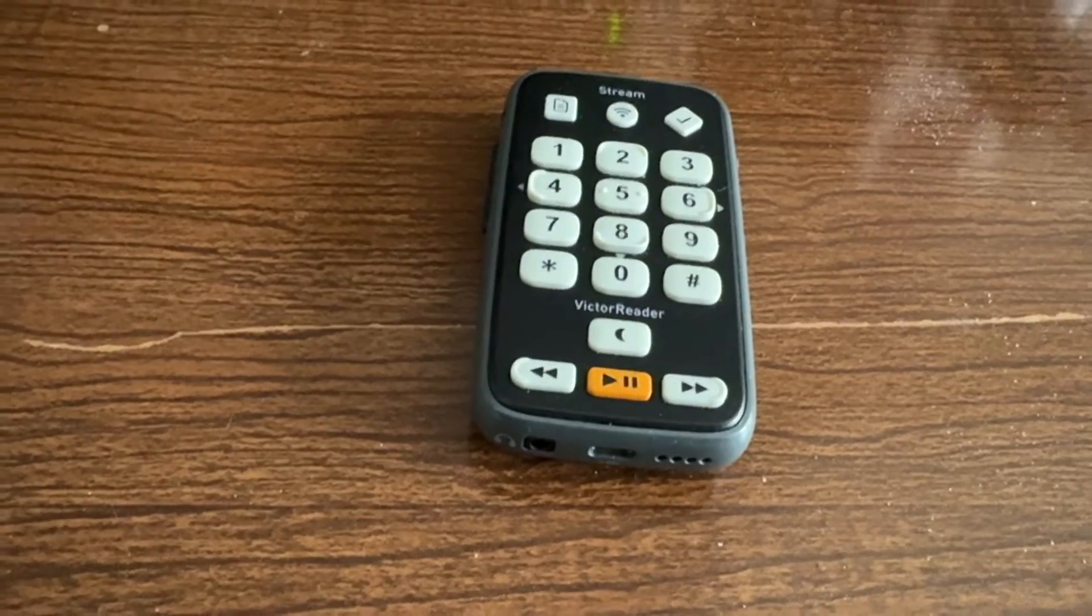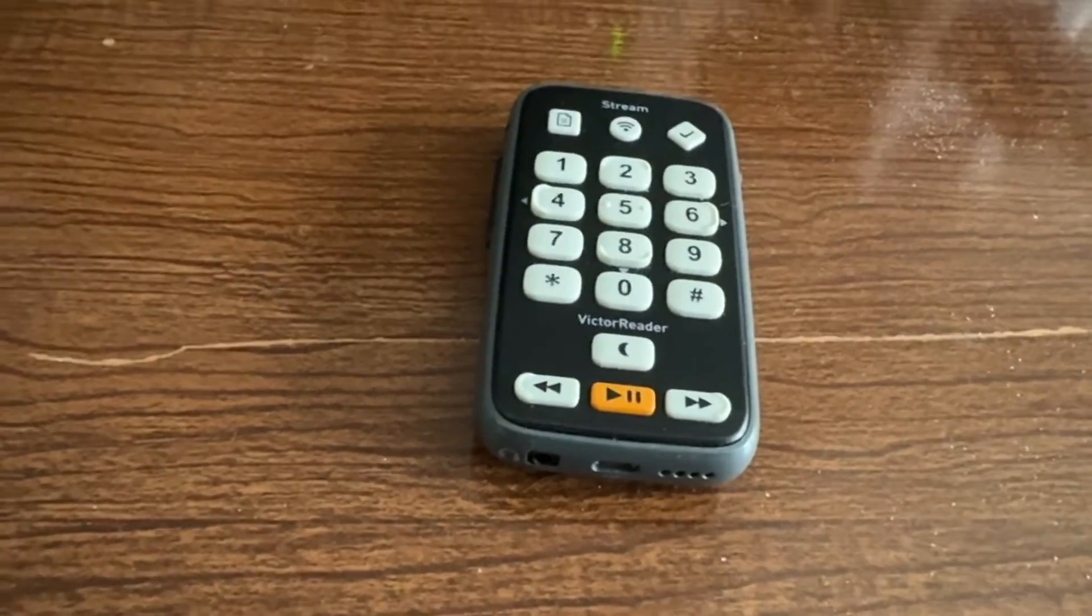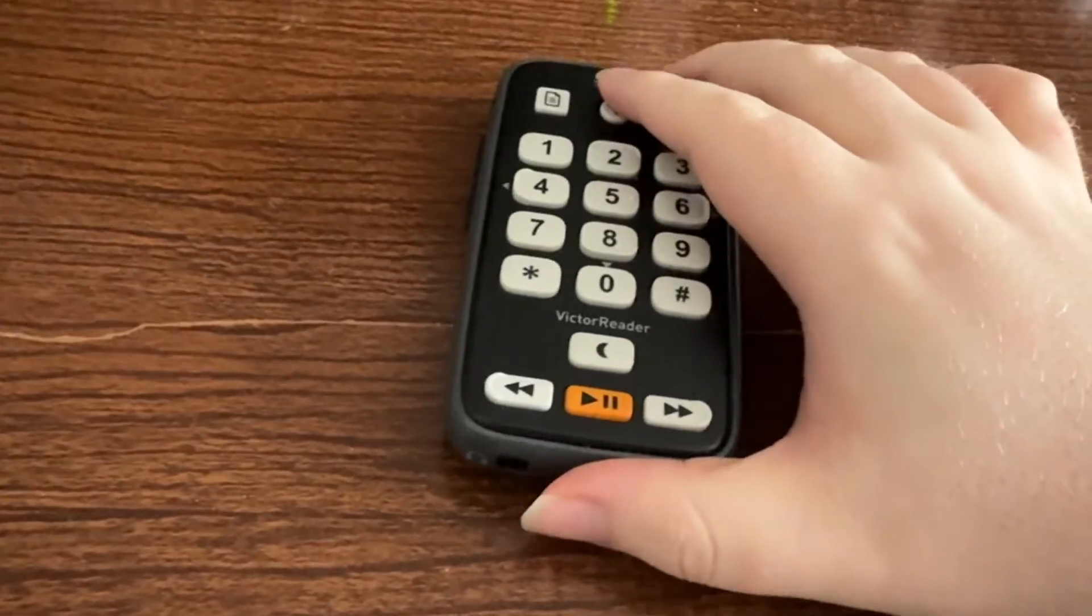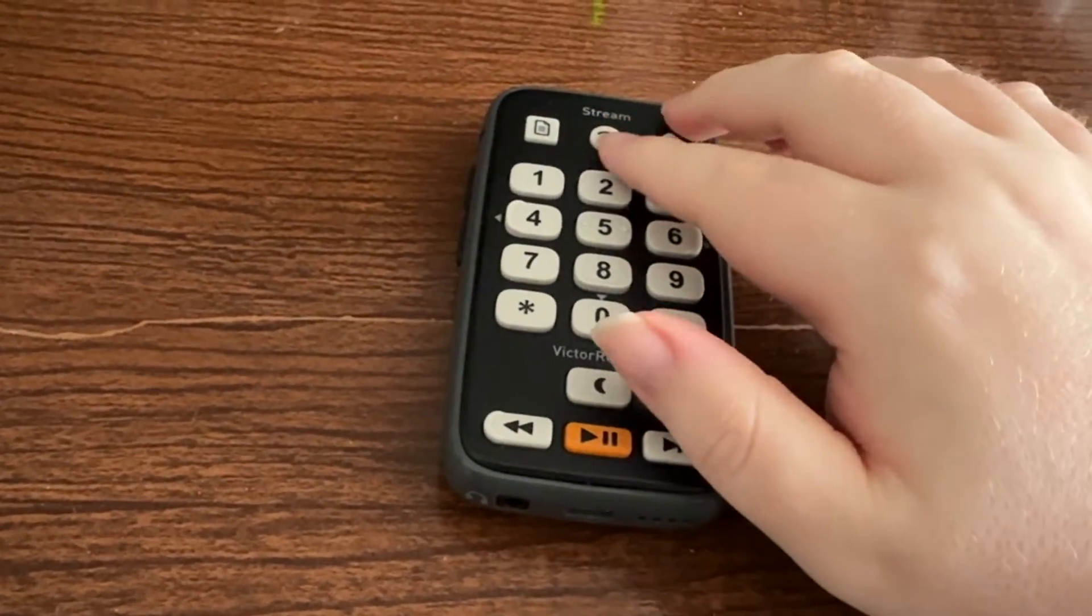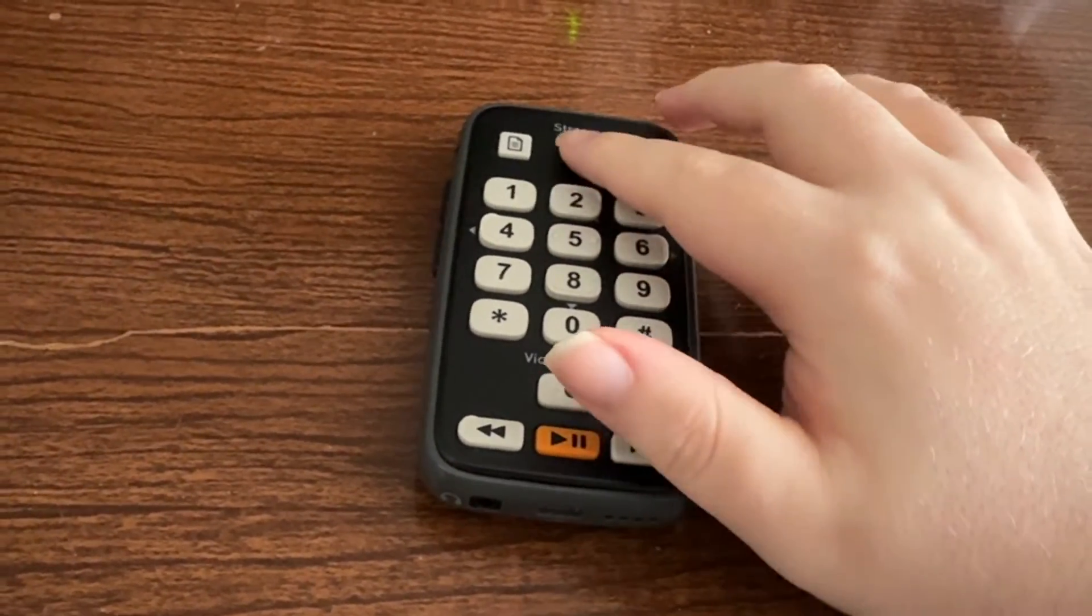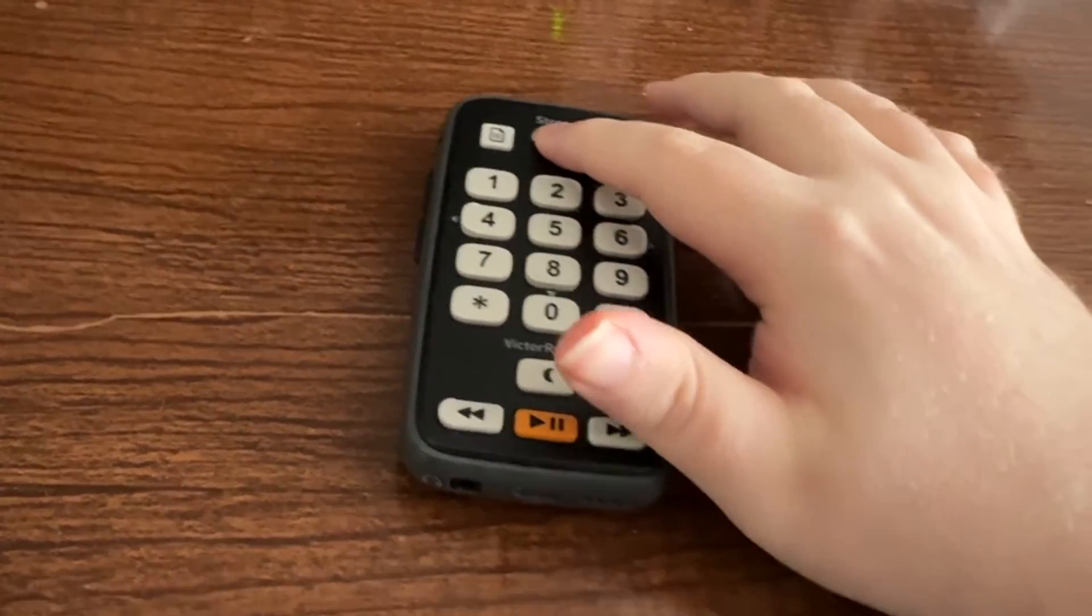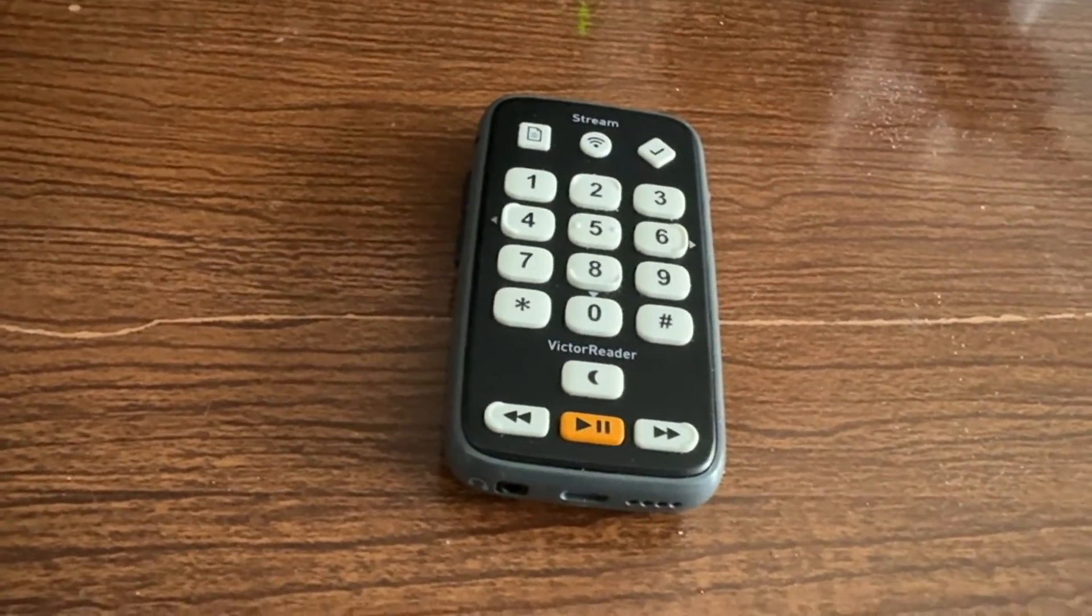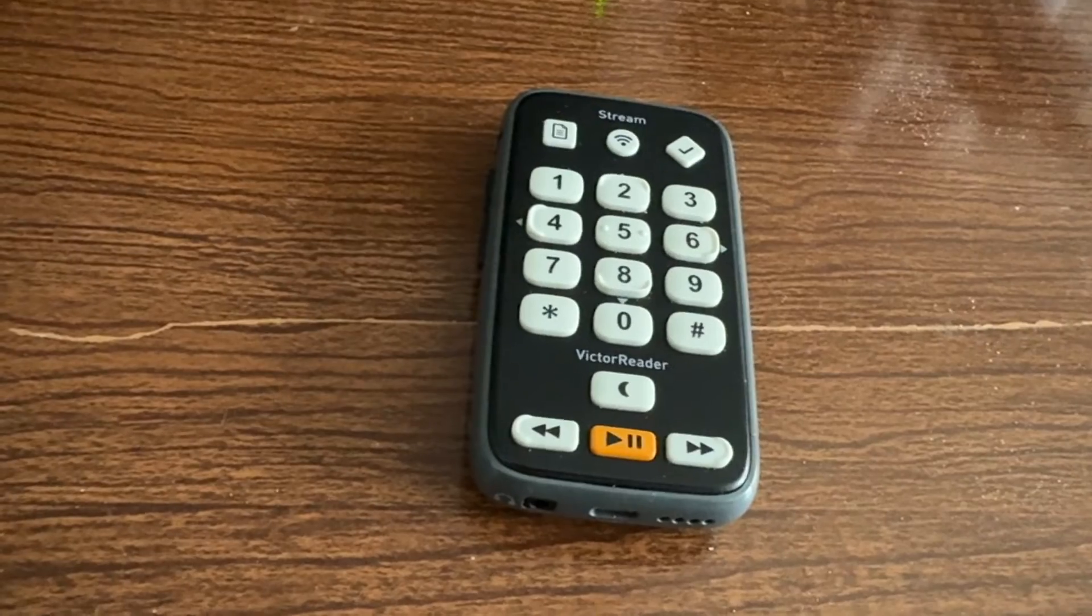First things first, of course, we need to be connected to Wi-Fi, so I'm going to go ahead and turn off airplane mode. I do already have the stream powered on, so I'll just go ahead and press and hold the online key, which is directly above the number 2. Airplane mode off. Okay, and it says that airplane mode is off, so that's good.